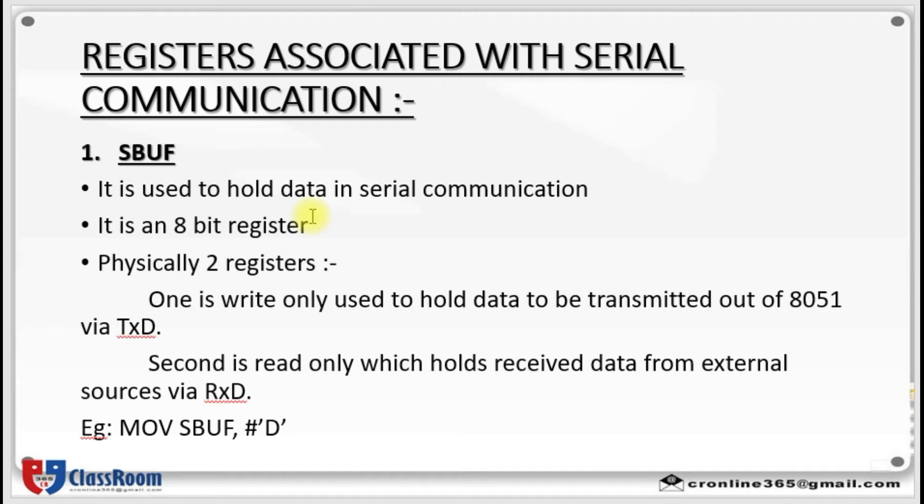For example, the instruction MOV SBUF, #'D' loads SBUF with the ASCII value of 'D'. As you know, 'D' has the value 44H, so SBUF equals 44H when this instruction is executed.